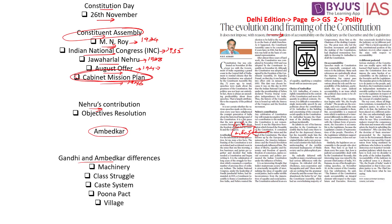The Constituent Assembly, or constitutional congress, brought people together to draft a constitution for the Indian people. Although the constitution was drafted and adopted on 26th November 1949, it did not come into effect until 26th January 1950, because that date commemorates when the Indian National Congress accepted the proposal of Poorna Swaraj back in 1930.